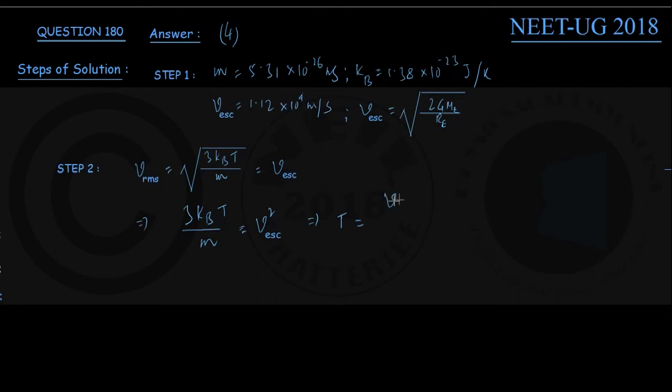Let us put the values next. T is coming out to be: escape speed noted here is 1.12 × 10^4 meter per second (this quantity will be squared), mass of each oxygen molecule given is 5.31 × 10^(-26) kg.